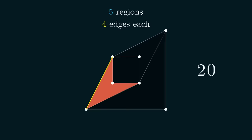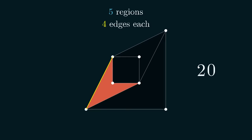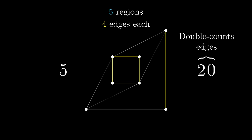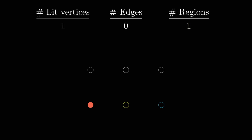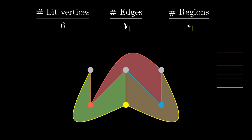Say you start at a house, then the next line has to be to some utility, and then a line out of that is going to go to another house. And you can't cycle back to where you started immediately, because you have to go to another utility before you can get back to that first house. So all cycles have at least four edges. And this right here gives us enough to prove the impossibility of our puzzle.